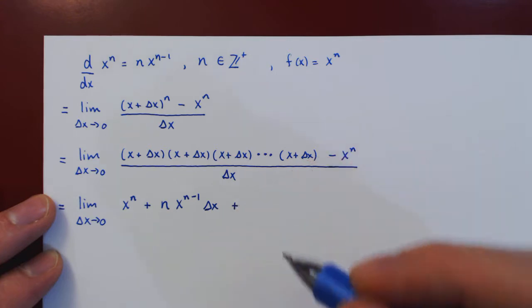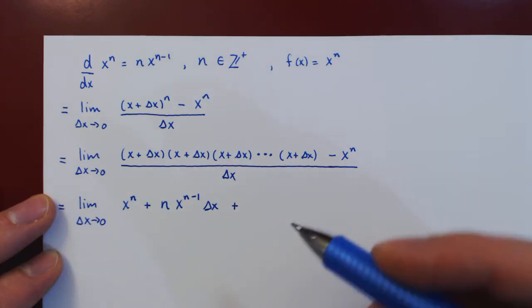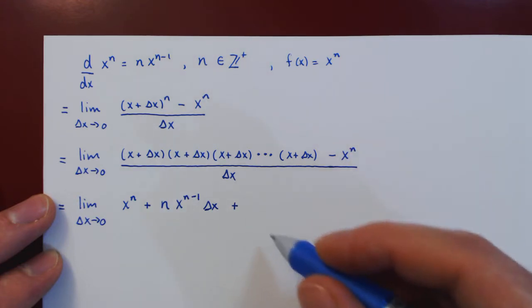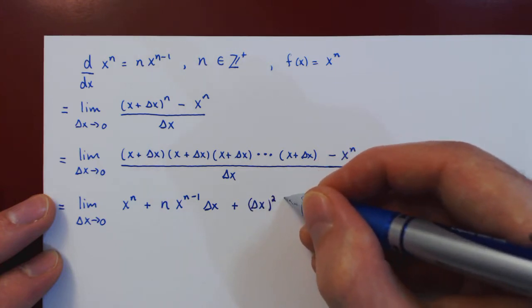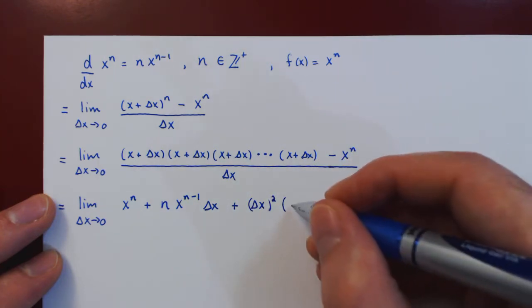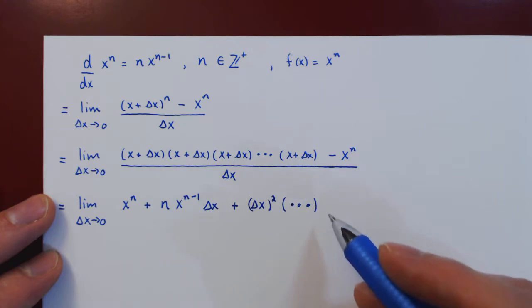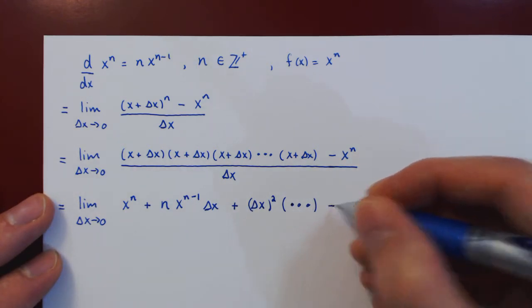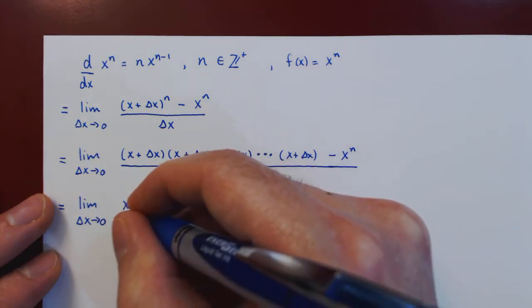Then plus, well, the terms that have a multiple of delta x squared, then delta x cubed, delta x to the fourth, up to delta x to the n. But all of these terms have at least a multiple of delta x squared. So think of simply regrouping these terms together and factoring out delta x squared. Then we're left with something quite complicated, but let's not worry about it for now, as we're about to see in the limit, this whole term will be shrinking to zero. And of course, let's not forget, minus x to the n, and all divided by delta x.